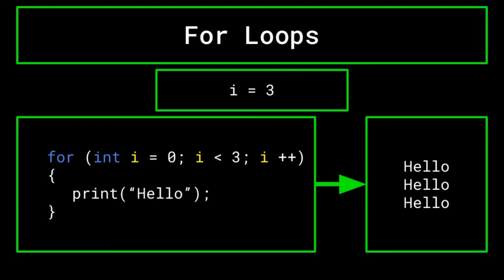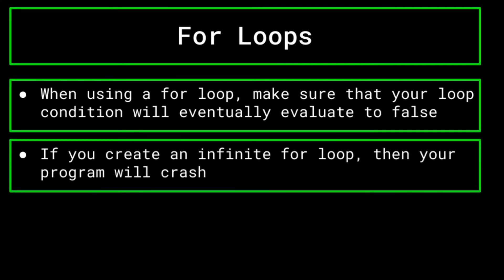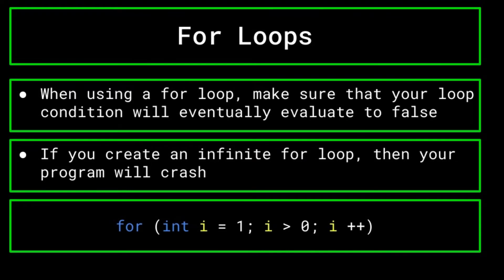This example is quite simple. However, you should be able to use it as a blueprint to understand how best to implement for loops in your own program. When you are using a for loop, it is important to ensure that given the initial value of the integer and the operation you have set, the condition must eventually evaluate to false so that you may exit the loop. If the condition always evaluates to true, then you have created an infinite loop and your program will crash. For example, consider a for loop where i is initialized to one, the condition is that i is greater than zero, and the operation is i++. Thus i can only get bigger, but in order for the for loop to exit, i would have to be less than or equal to zero, which can never happen. Be sure to avoid situations like this so that your program can run without crashing.